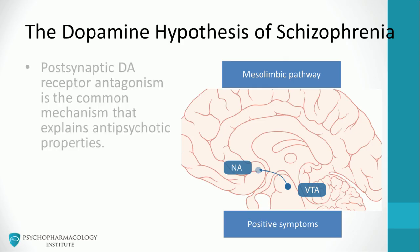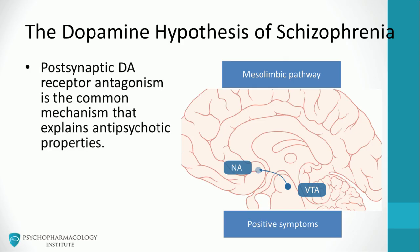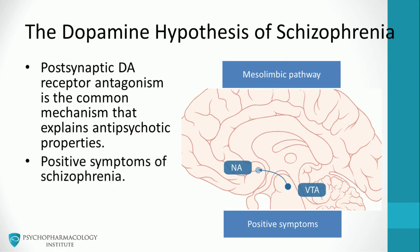The dopamine hypothesis of schizophrenia postulates that postsynaptic dopamine antagonism is a common mechanism that explains antipsychotic properties. The pharmacologist and clinician Stephen Stahl argues that it would be more appropriate to refer to this theory as the dopamine hypothesis of positive symptoms of schizophrenia, since there are more pathways and psychopathological dimensions not included in this theory.